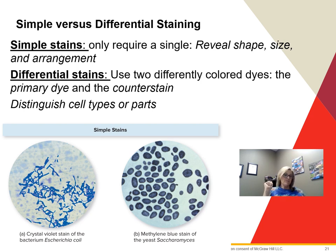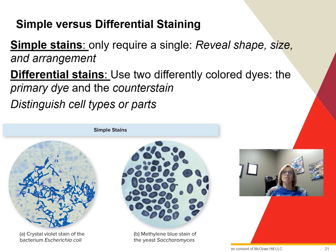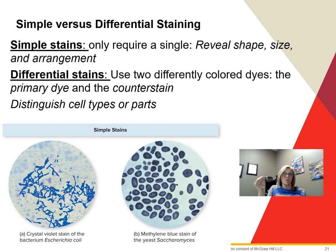Simple stains use only one dye — hence the word simple. They are uncomplicated, with not many steps. This causes all cells in the smear to be about the same color regardless of type. The purpose is to reveal the shape, size, and arrangement of bacteria — whether they are singles, pairs, or clusters.